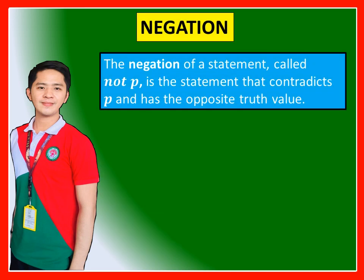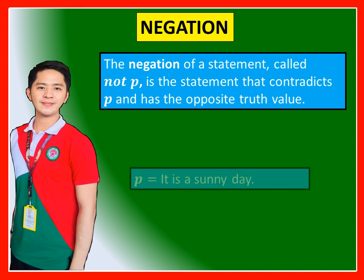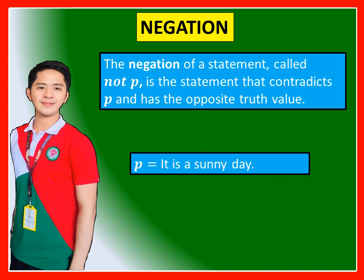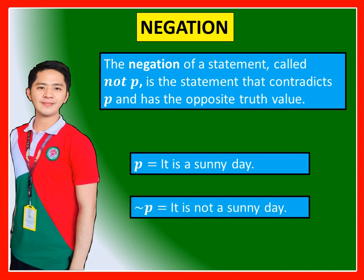Negation: The negation of a statement, called not P, is the statement that contradicts P and has the opposite truth value. If our P is 'It is a sunny day,' then its negation — not P — is 'It is not a sunny day.'